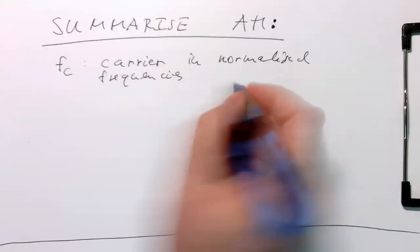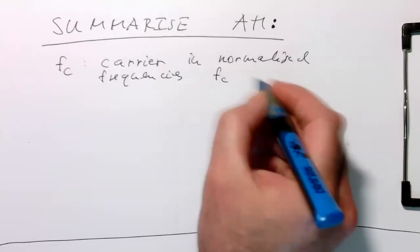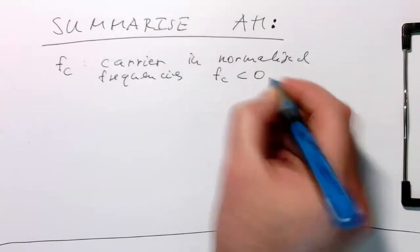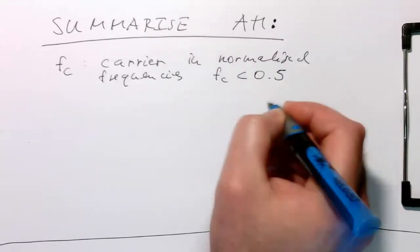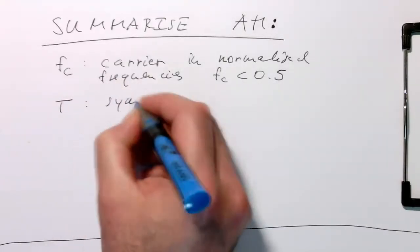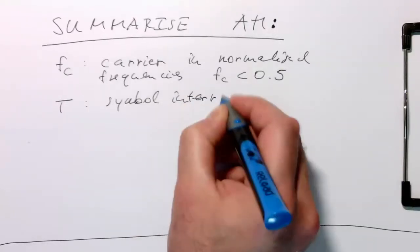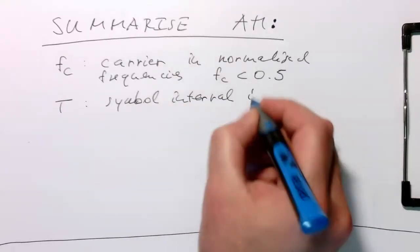And so the Fc can run, so Fc has to be below 0.5. And then we define T, our symbol interval, in samples.